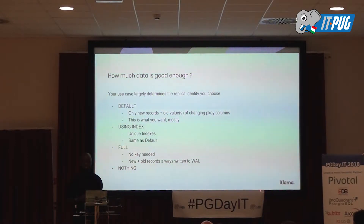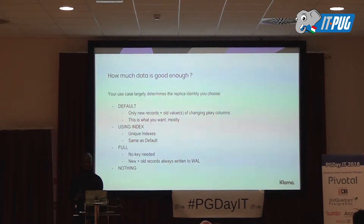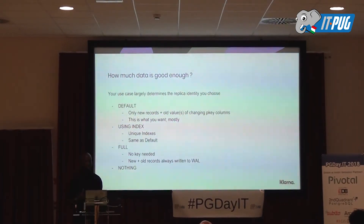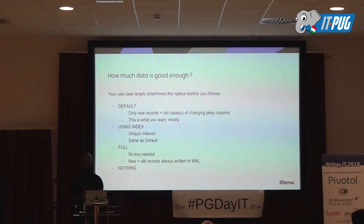How much data is good enough when it comes to logical decoding? That brings us to the replica identity. For each table you are trying to decode, you can set the replica identity. The default is that when you create a table it gets a default replica identity, which means you only get the new records, and only if a primary key column changes do you also get the old record. You can also use a unique index, which gives you the same behavior as the default replica identity, just using the unique index instead of the primary key.